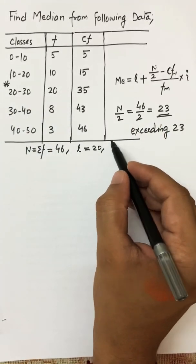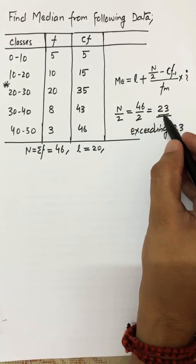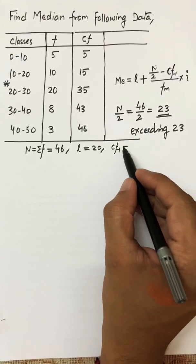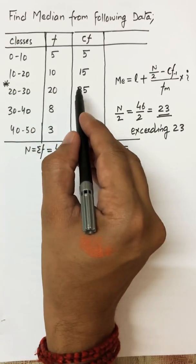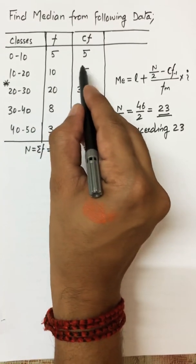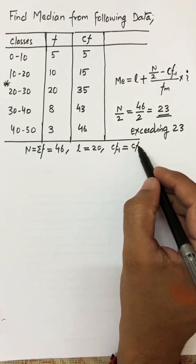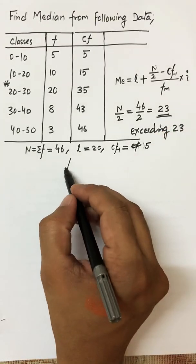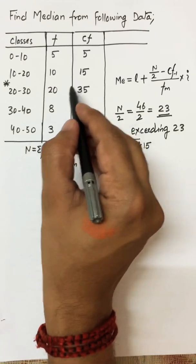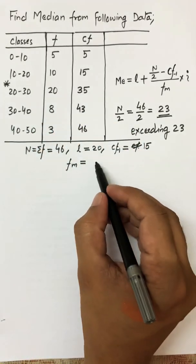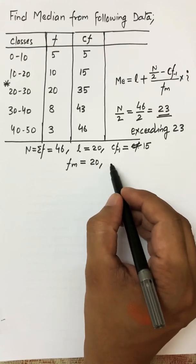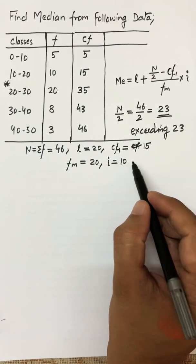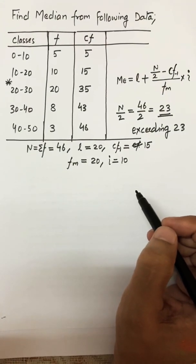Now I identify all formula values. The lower limit L of the median class is 20. N by 2 is already calculated as 23. CF minus 1, the cumulative frequency previous to the median class, is 15. FM, the frequency of the median class, is 20. I, the class interval of 20 to 30, is 10.